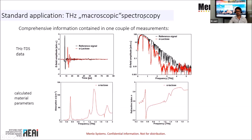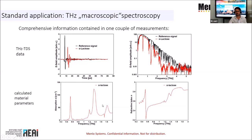I call this a macroscopic spectroscopy experiment. You have a slab, you put it through the beam, and take two measurements — similar to FTIR. You take a reference signal that gives the status of the instrument, then insert the sample and compare both measurements to calculate material parameters. For example, we see here the absorption of lactose sugar — I will show it live in a few minutes — and the corresponding calculation of refractive index, where at the absorption resonance we see a strong variation of the refractive index.